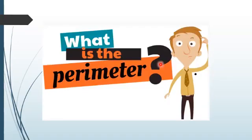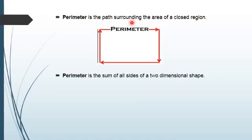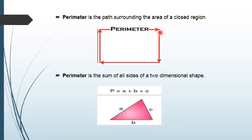So what is the parameter? Parameter is the path surrounding the area of a closed region. In this figure, this outside boundary will be the parameter of this region. Or, parameter is the sum of all sides of a two-dimensional shape. For example, this is a two-dimensional shape, so its parameter will be the sum of all of its sides and its parameter will be equal to a plus b plus c.